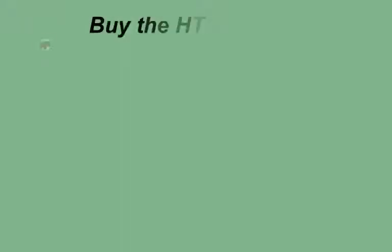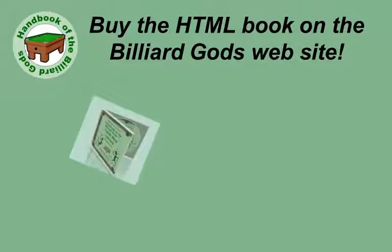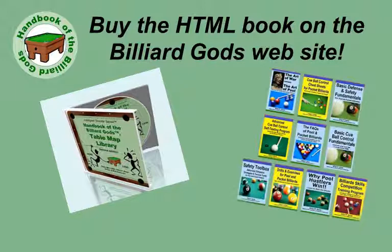You can buy the HTML book on the Billiard Gods website. The table map library shows critical ball patterns for one pocket and nine ball players. The author has also written these books, all created to help players improve their shooting and thinking skills. The Billiard Gods blog has posts that include excerpts from these books.